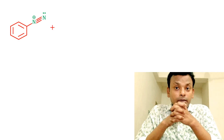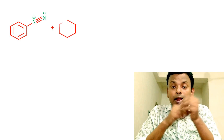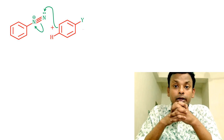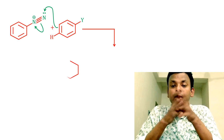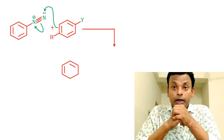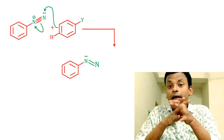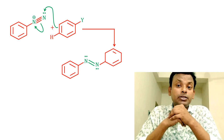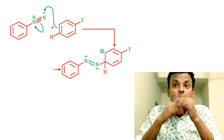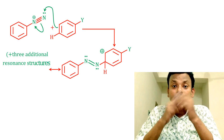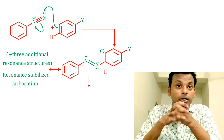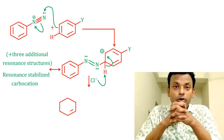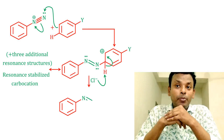Here the diazonium salt acts as an electrophile attacking another aromatic compound that contains a strong electron donor group, forming a carbocation. This carbocation is stabilized through resonance — three additional resonating structures are formed — and it is called the sigma complex. The last step is loss of a proton to form the azo compound.